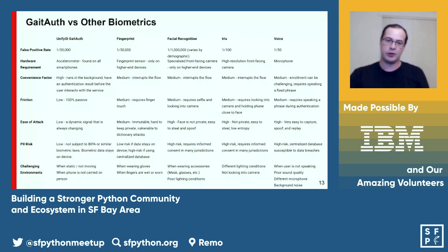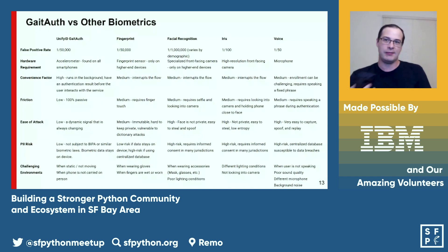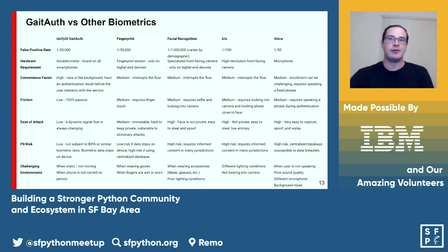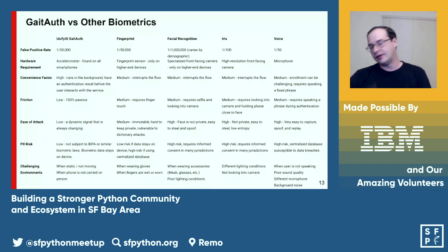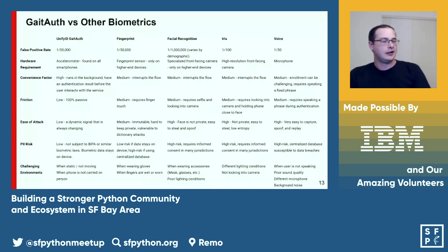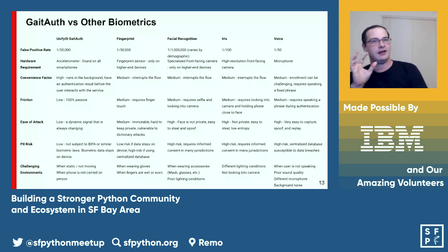Now a lot more people are wearing masks because of the pandemic when they're in stores, so they can't use facial recognition anymore. Using this type of passive authentication, they're still able to get a good experience in those cases. Comparing gait to other biometrics: iris has a false positive rate of about one in 100,000, but it doesn't always work in poor lighting conditions and the camera has to be close to your face. Voice is about a one-in-50 false positive rate — about 2% — and it's very sensitive to different microphones.